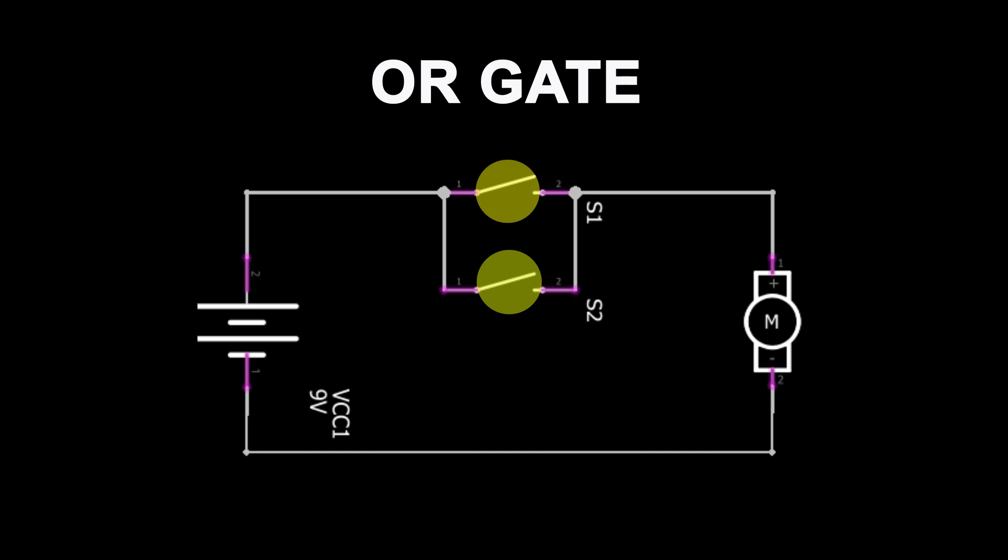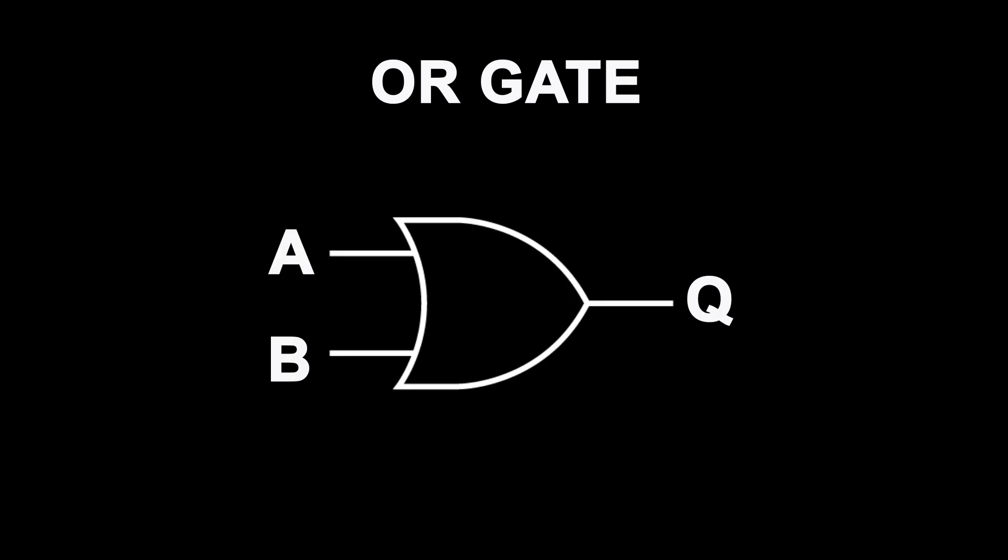So let's move over to the circuit schematic symbol for an OR gate which looks like this. You'll notice it looks very similar to the AND gate. It has two pins on the left hand side and one pin on the right hand side. The two pins on the left hand side are your inputs and the pin on the right hand side is your output. So in this scenario to get a 1 coming out of the OR gate you need a 1 on either of the pins going in. So this pin or this pin.